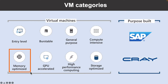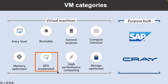The fifth type is memory optimized. Memory optimized virtual machines offer a high memory-to-CPU ratio and are great for relational database servers, medium to large caches, and in-memory analytics. The next type is GPU accelerated — specialized virtual machines targeted for heavy graphic rendering, video editing, as well as model training and inferencing with deep learning. These are available with single or multiple GPUs.